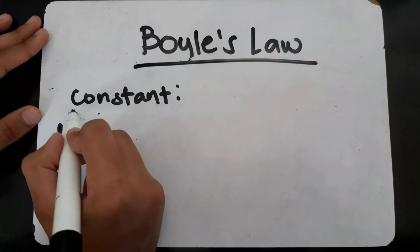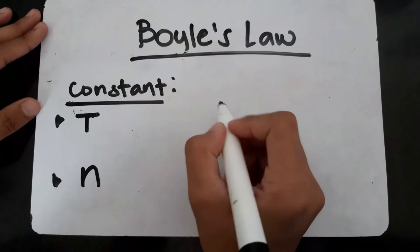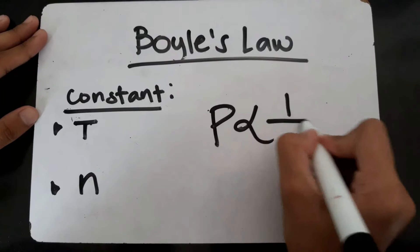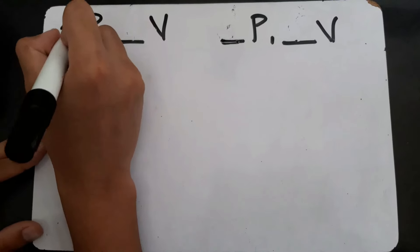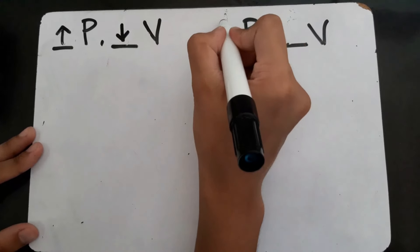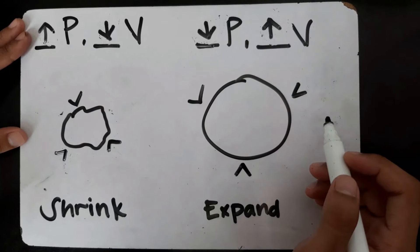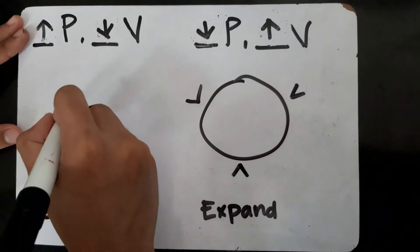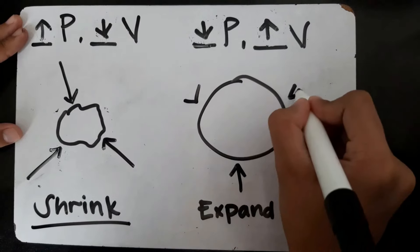Under constant temperature and number of particles, pressure and volume of gases are inversely proportional to each other. This means that when pressure increases, volume decreases, and when pressure decreases, volume increases. This happens because outside pressure forces a flexible container to shrink or expand.